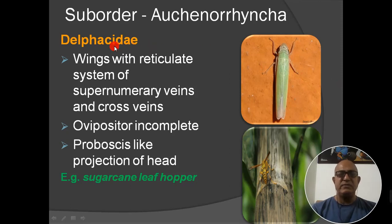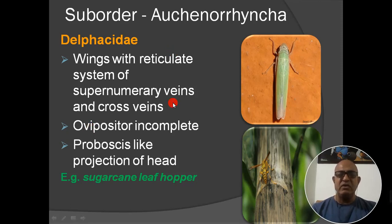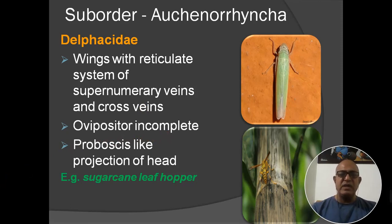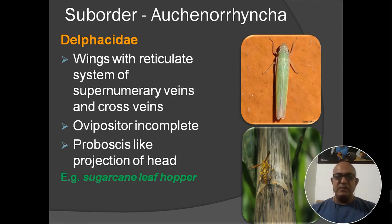Next family: Delphacidae. Wings have a reticulate system of supernumerary veins and cross veins — cross veins connect longitudinal veins to each other. The ovipositor is incomplete. There is a proboscis-like projection of the head — a trunk-like structure projecting from the head. The example is the sugarcane leaf hopper, which causes major infection in sugarcane crops.